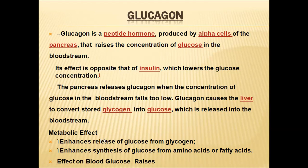Glucagon is released when blood glucose levels are below normal. It converts glycogen into glucose and enhances the synthesis of glucose from amino acids and fatty acids — a process called gluconeogenesis. When fasting for more than one day, gluconeogenesis is stimulated by glucagon. By promoting glycogenolysis and gluconeogenesis, glucagon raises blood glucose levels.